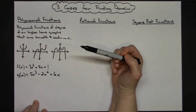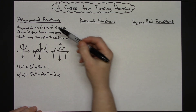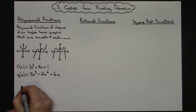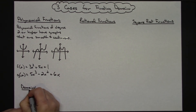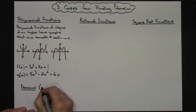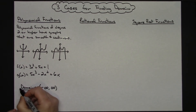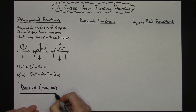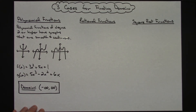Across the board, all of these polynomial functions are going to be smooth and continuous and they're going to go on forever and ever in both directions. So for a polynomial function, you can just memorize that the domain, because of the way their graphs look, gives you a domain of negative infinity to positive infinity. Written in interval notation, that would also be all reals.